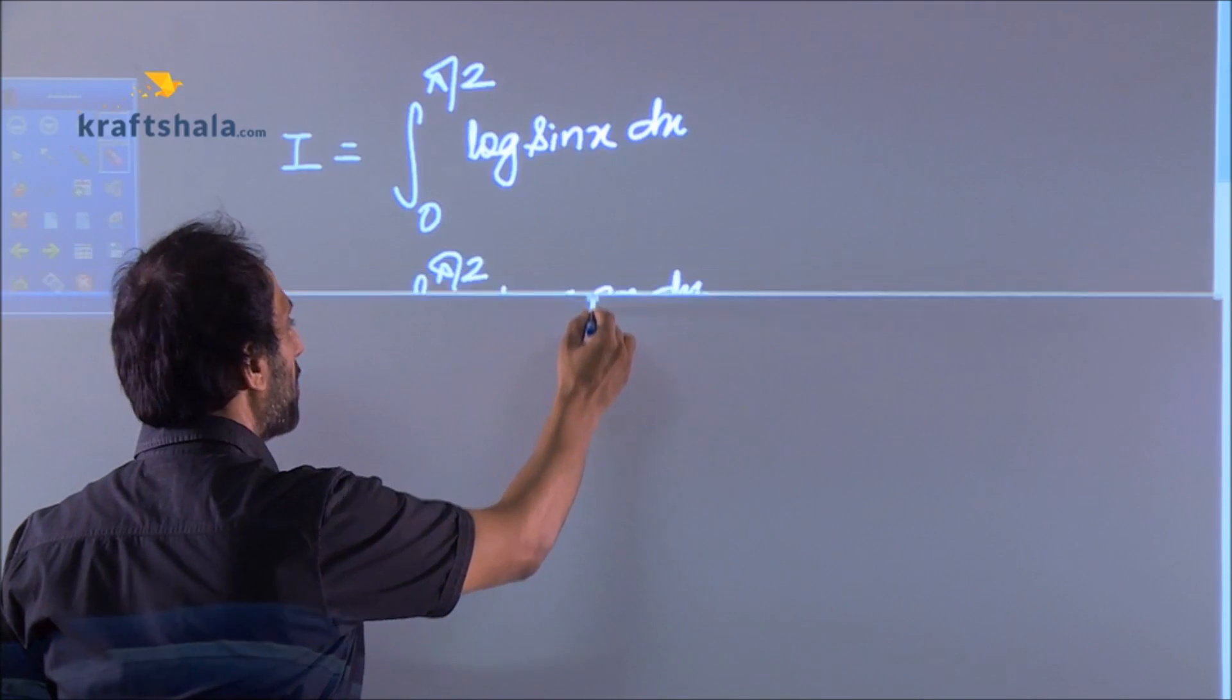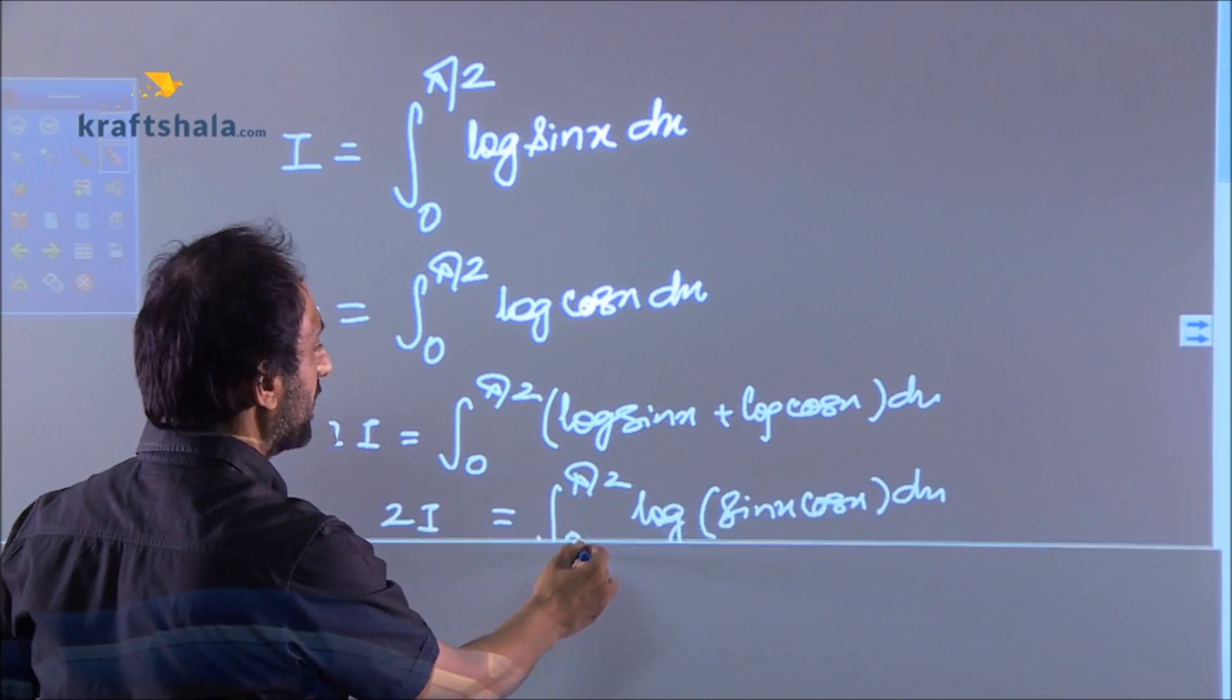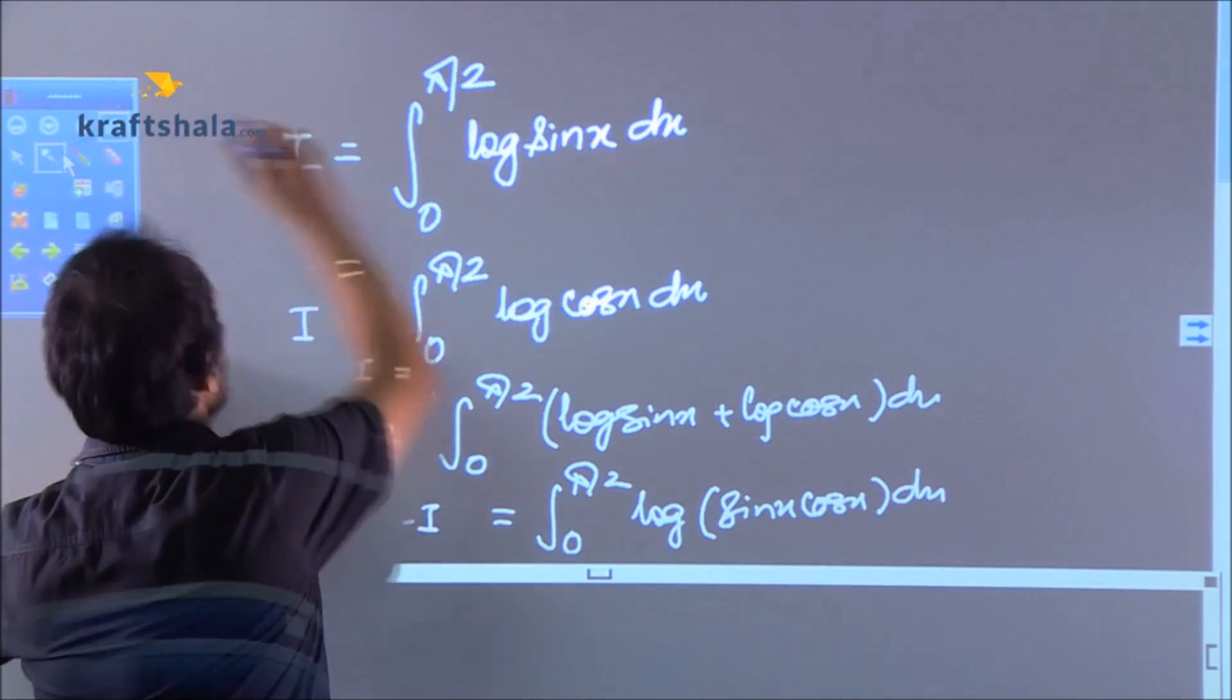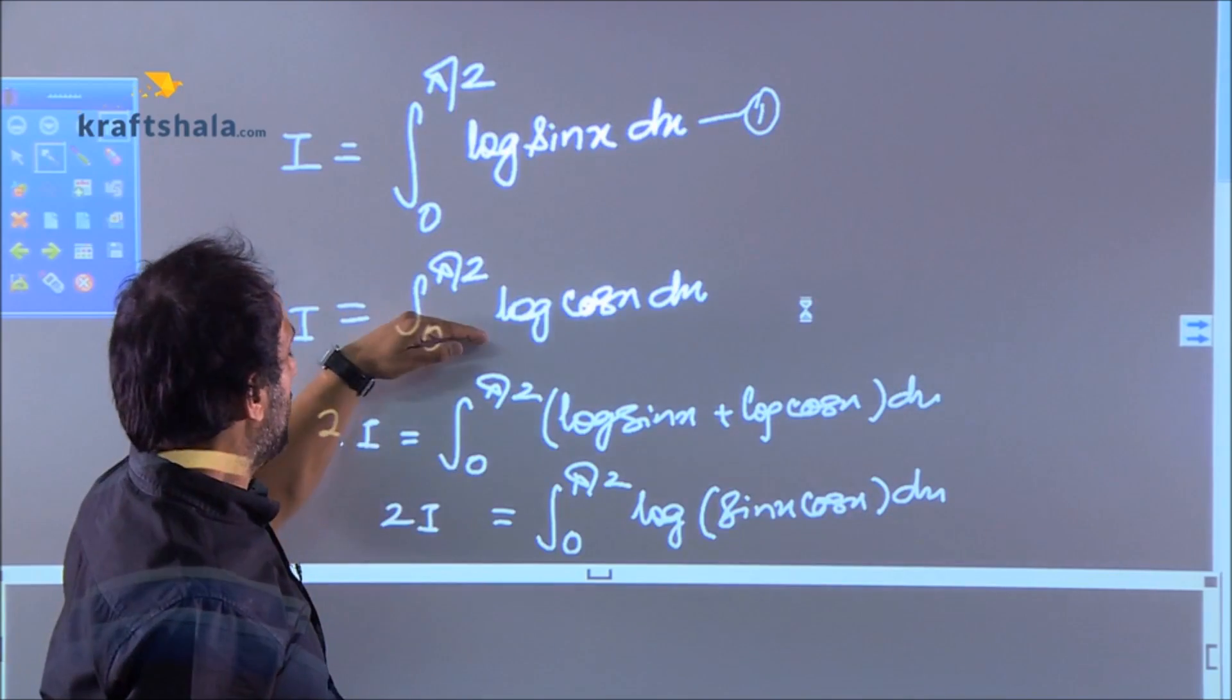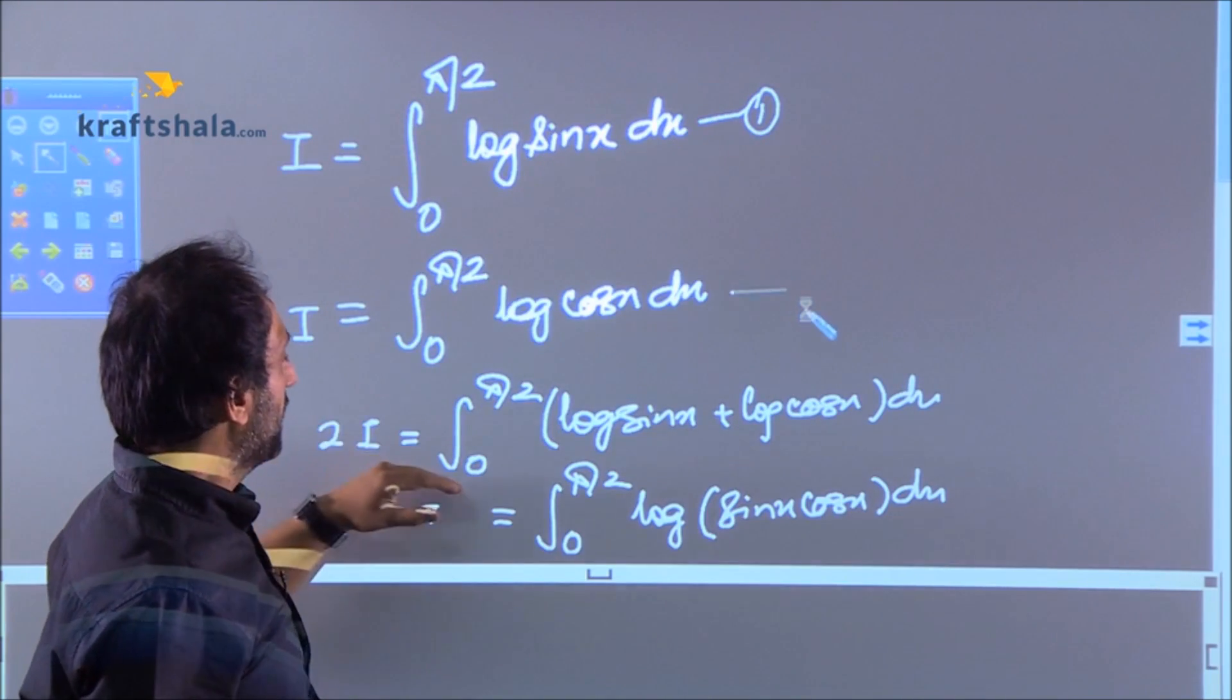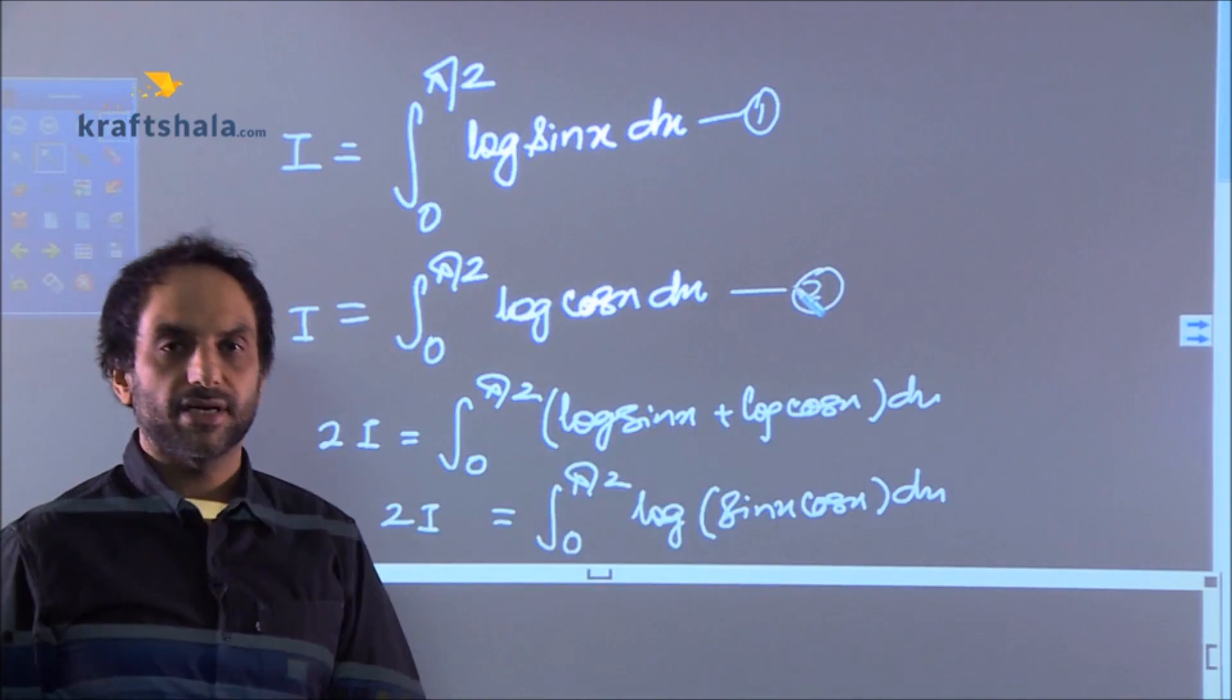So I'm applying the same property and adding them. The time we add equation number 1 with equation number 2, we get twice of I and this becomes 0 to π/2 log sin x plus log cos x.